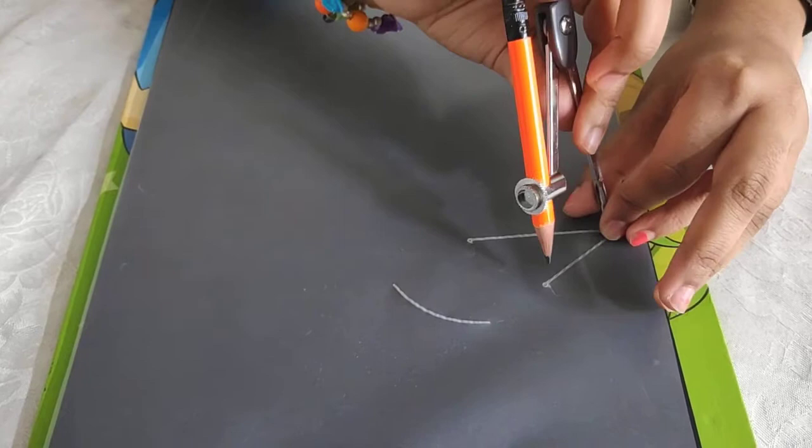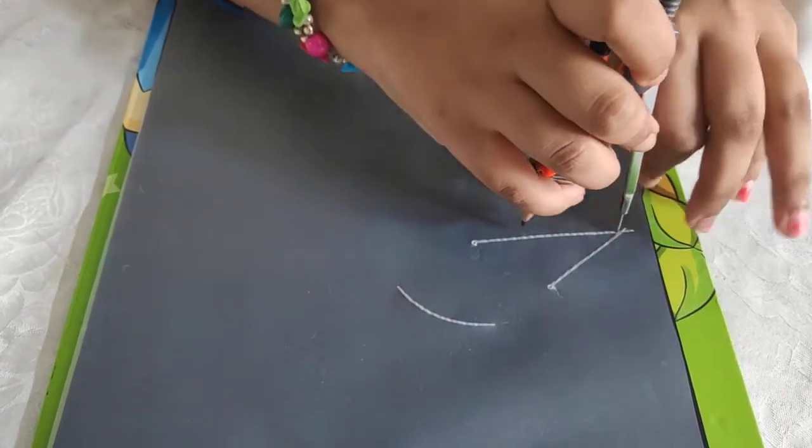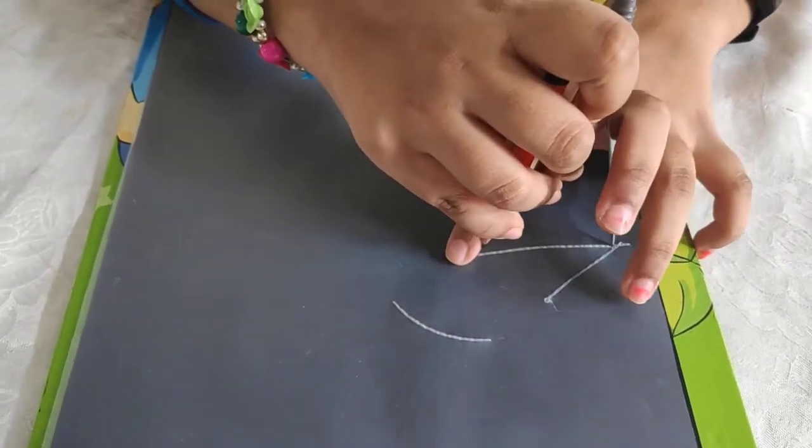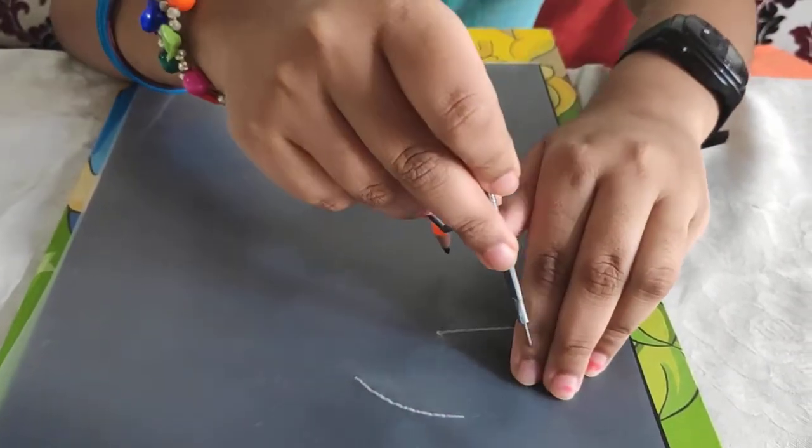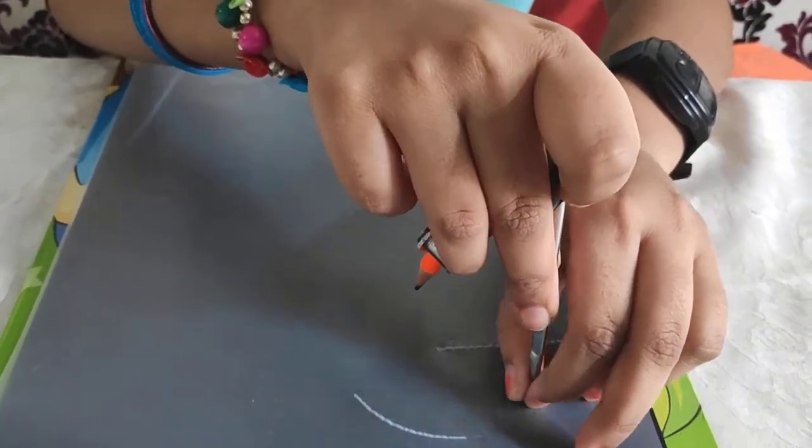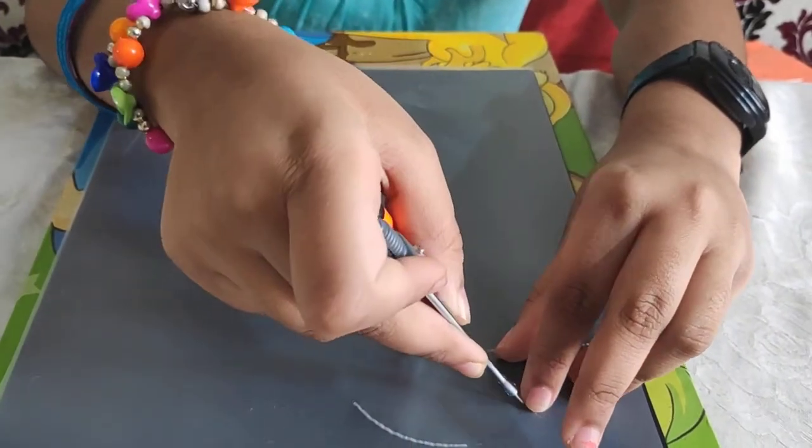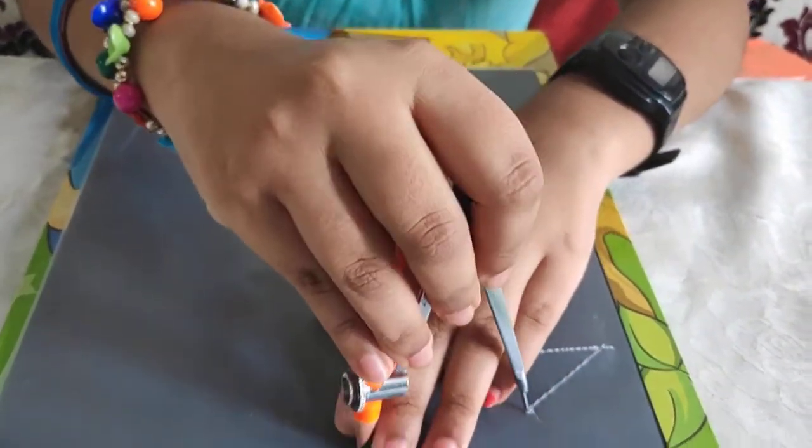Now I'm going to place my compass needle at B, stretch the compass to A. Now I'm going to place my compass needle at C and cut my first arc.